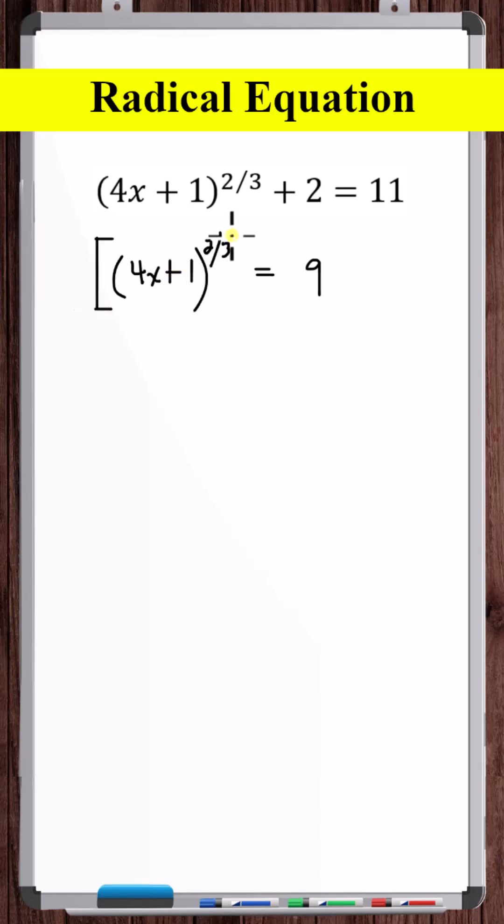Now let's raise both sides to the 3 halves power. That way, these two exponents cancel to 1. However, when we raise both sides to the 3 halves power, we're taking an even root of both sides. So we need to put plus or minus here.